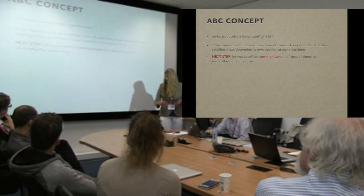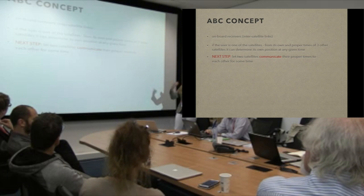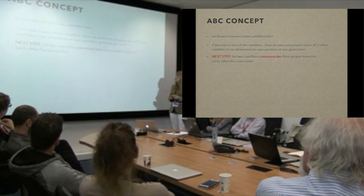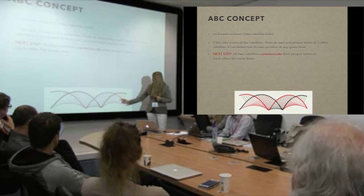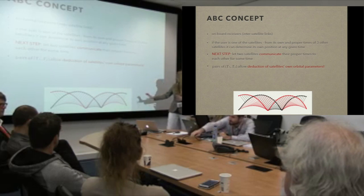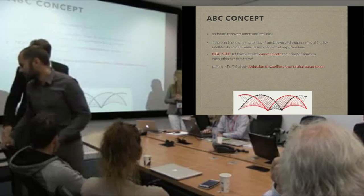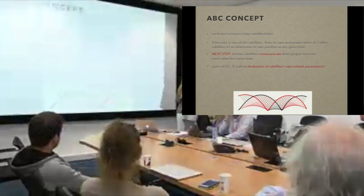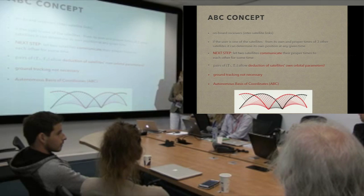If we go one step further and take two satellites which are not just at one given point but continuously along the orbit — for some time, maybe several orbits — they are communicating their proper times to each other. From these pairs of proper times which they receive along the orbit, it is possible to deduce the orbital parameters of these satellites. This tells us that we do not need ground tracking, because the satellites can figure out by themselves what their orbital parameters are. This is what we call the Autonomous Basis of Coordinates (ABC).